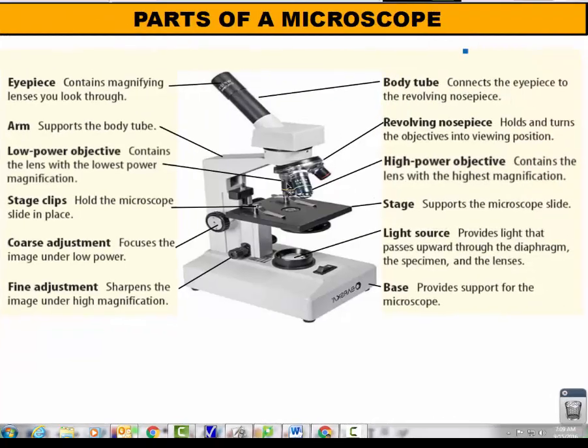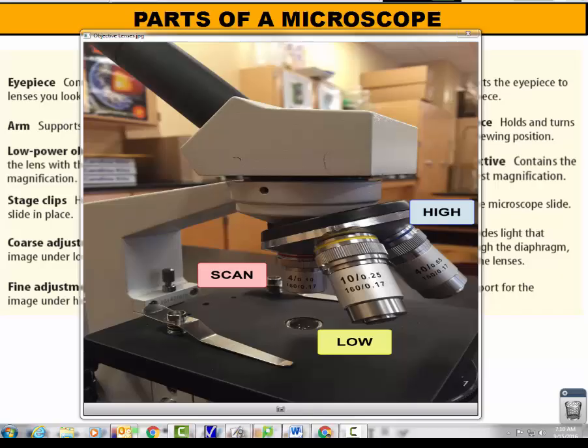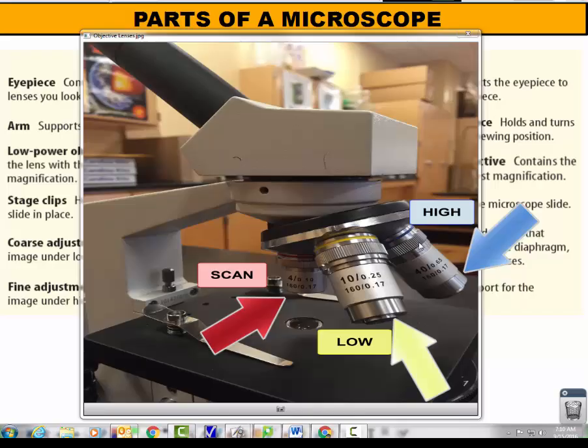So hopefully that was easy enough. Now let's take a look at the three objective lenses that we have on the microscope. If you take a look at the microscope we have three objective lenses with three different colors. We have a red lens, a yellow lens, and a blue lens.